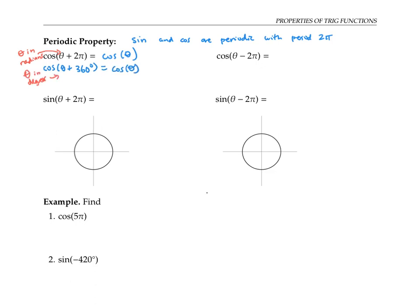We can make the same statements for sine: sine of an angle plus two pi is equal to sine of the original angle, where the angle is measured in radians. If we want to measure the angle in degrees, the statement is that sine of theta plus 360 degrees is equal to sine of theta.